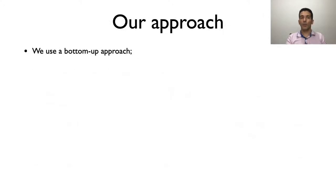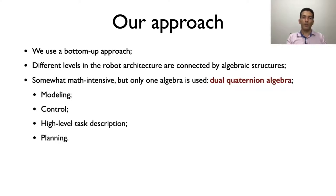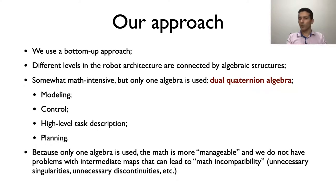We use a bottom-up approach, where different levels in the robot architecture are connected by algebraic structures, which is somewhat math-intensive, but only one algebra is used, namely dual quaternion algebra. We use dual quaternion algebra for modeling, control, high-level task description, and planning. Because only one algebra is used, the math is more manageable, and we do not have problems with intermediate maps that can lead to math incompatibility, such as unnecessary singularities, unnecessary discontinuities, etc.